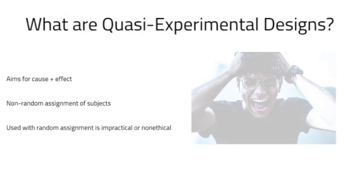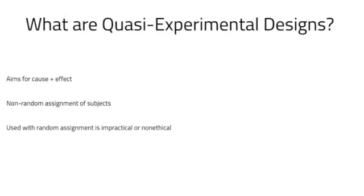You're not able to randomly assign in a quasi-experimental design generally because either it's not possible or it's not ethical. In the end of the day, you're still aiming to answer the same questions. But the amount of evidence that you have for a true experiment tends to be greater than for a quasi-experimental design.